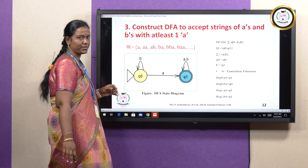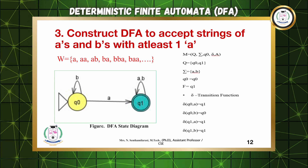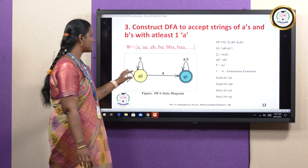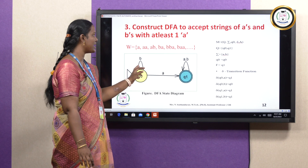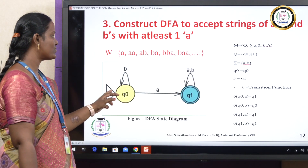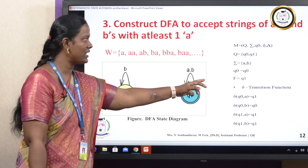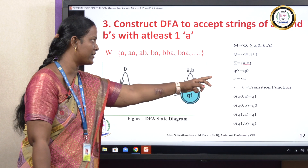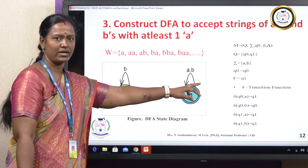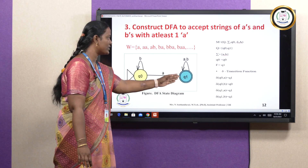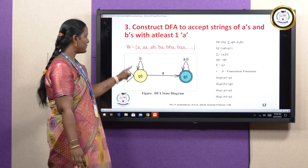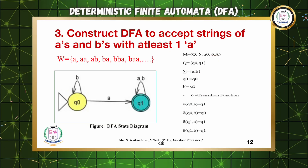Writing the five tuples: M = (Q, sigma, Q0, delta, F). Q = {Q0, Q1}. Sigma = {A, B}. Initial state Q0. F = {Q1}. Transitions: delta(Q0, A) = Q1; delta(Q0, B) = Q0; delta(Q1, A) = Q1; delta(Q1, B) = Q1. This completes the third question.